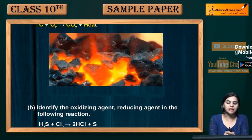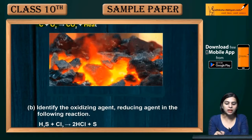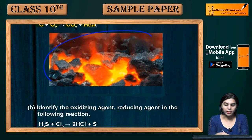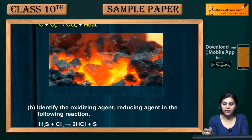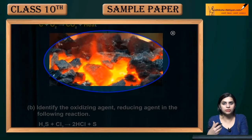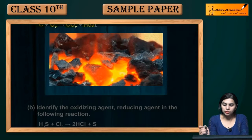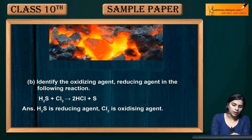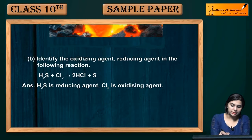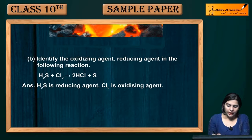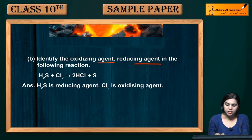When we use coal in winter, it provides a lot of heat — that is because it is an exothermic reaction. So burning of coal in air is your combination reaction which is also exothermic. Next: identify the oxidizing agent and reducing agent in the following reaction.